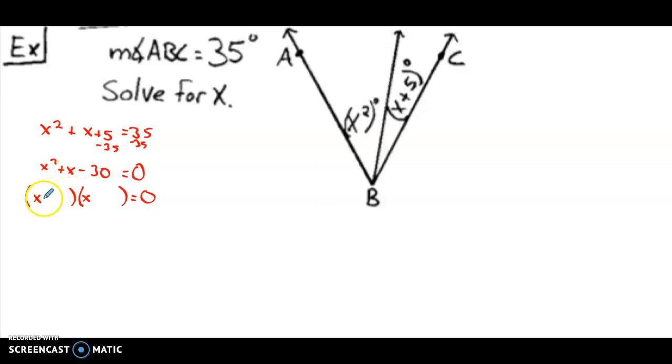This middle term is our check. So when we do the outside part of FOIL and the inside part of FOIL, those two quantities have to combine to be our middle term. That's got to be plus 6 and minus 5. 6 times negative 5 gives us our negative 30. When we do the outside, that's negative 5x. When we do our inside, that's 6x, and combine those to get positive x.